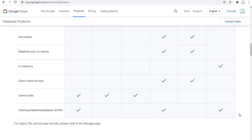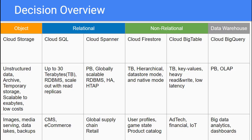You can also go to the GCP documentation to review details on each service. At the end, I summarized the GCP storage and database decision tree with keywords and use cases to help you remember for the exam. The options divide into Object, Relational, Non-Relational, and Data Warehouse. For example, Cloud Storage is for unstructured data, archive, and temporary storage — the lowest cost storage option for up to exabytes. Use cases include images, media serving, data lakes, and backups.